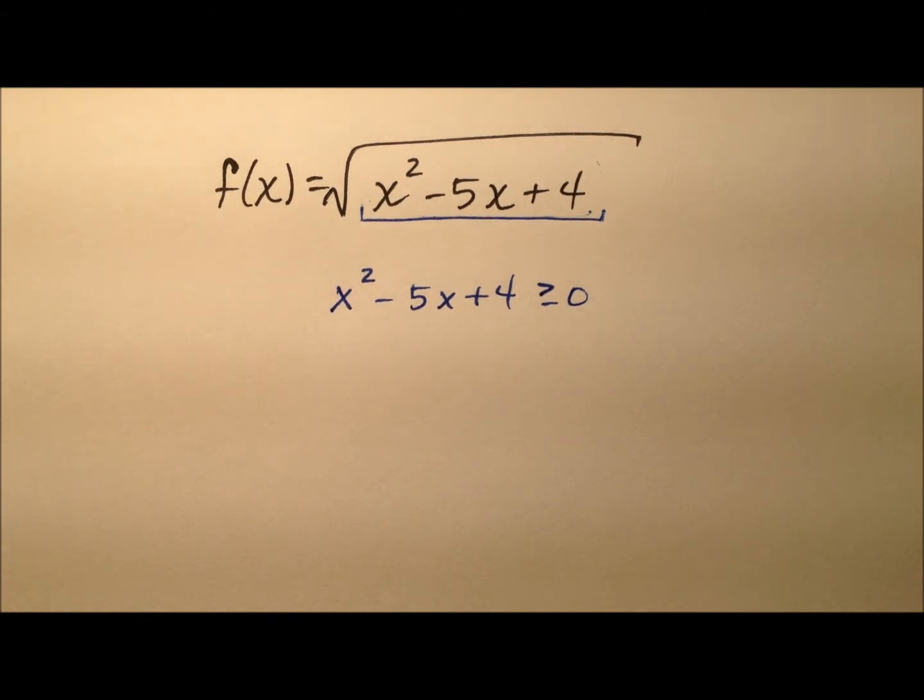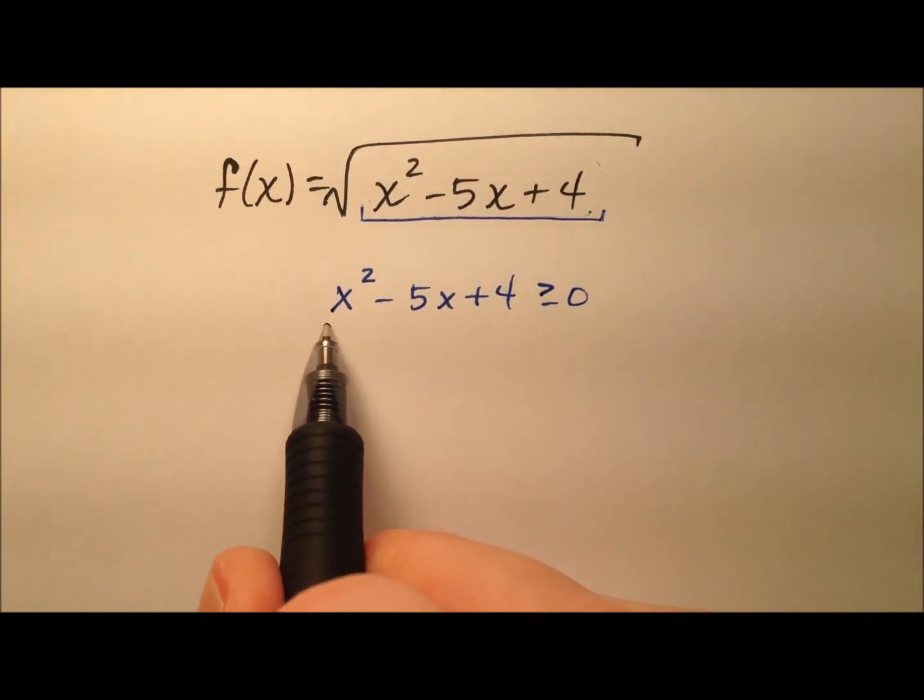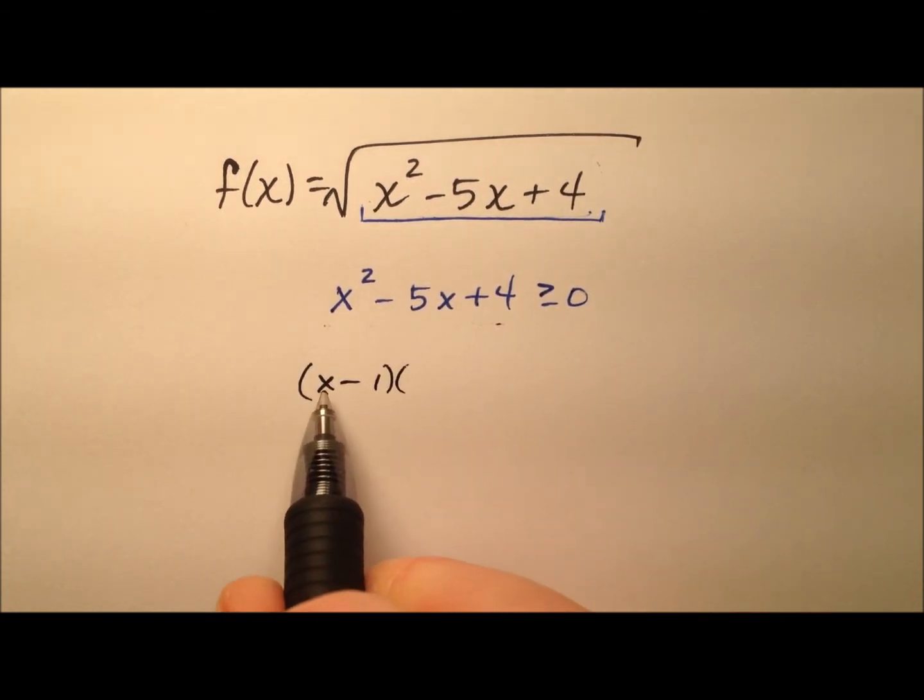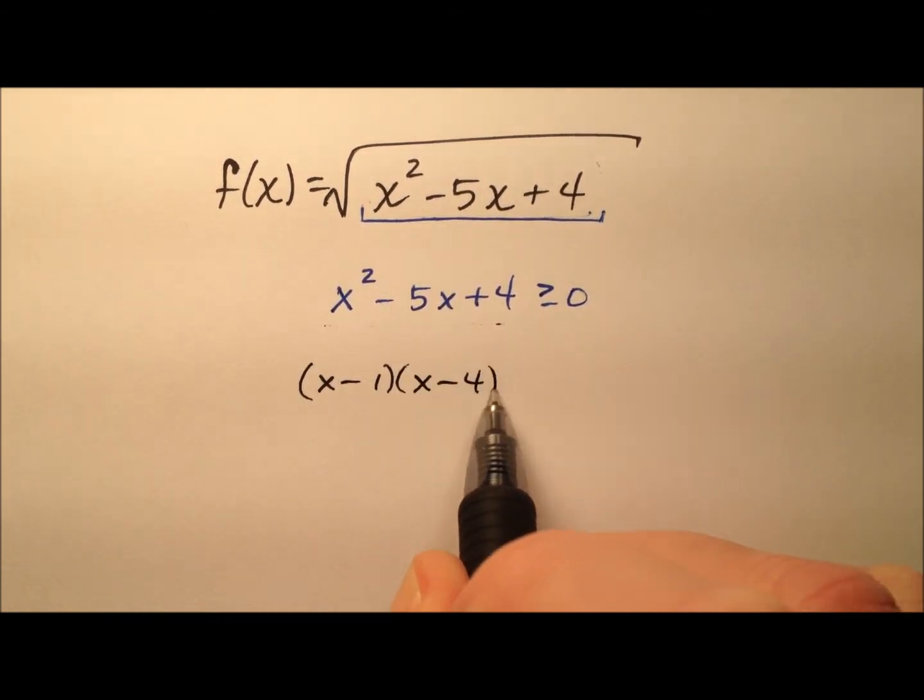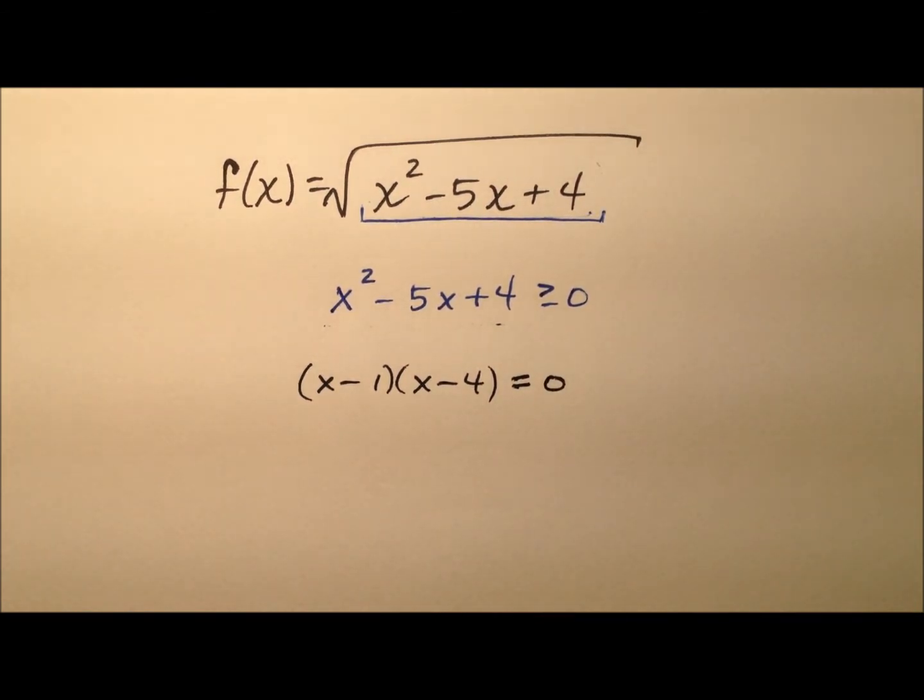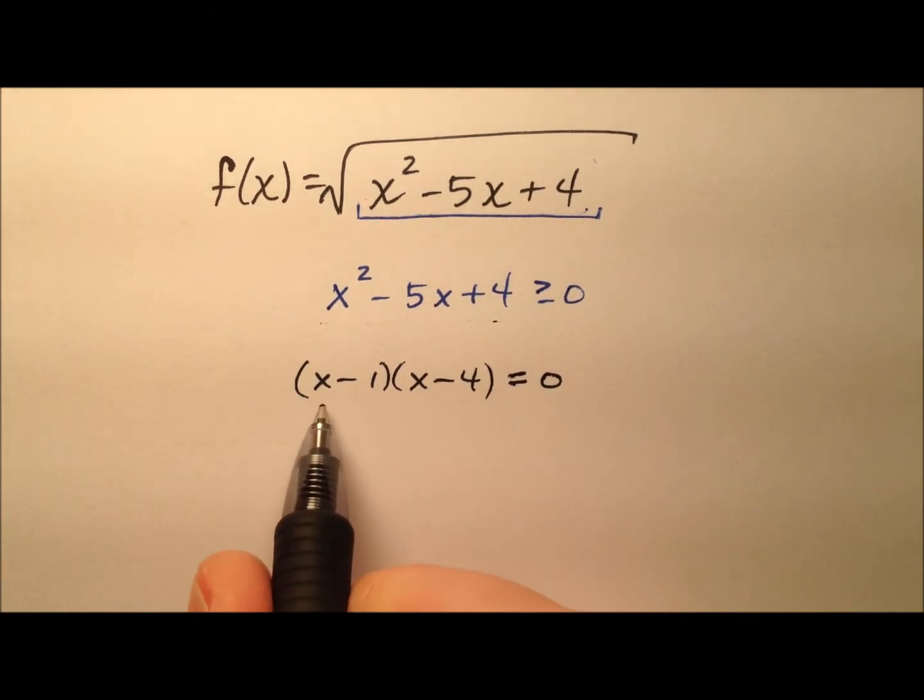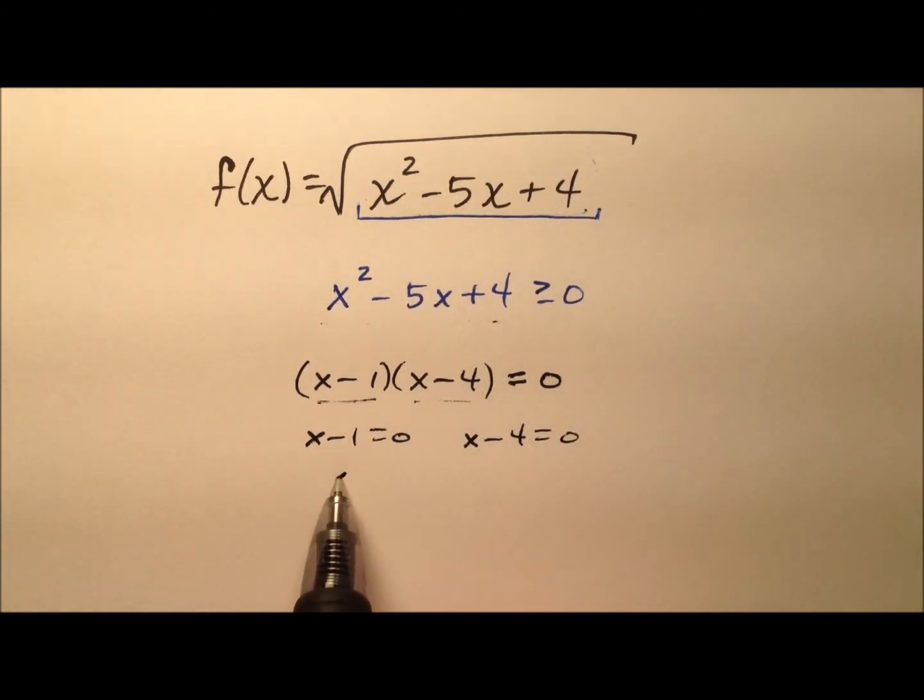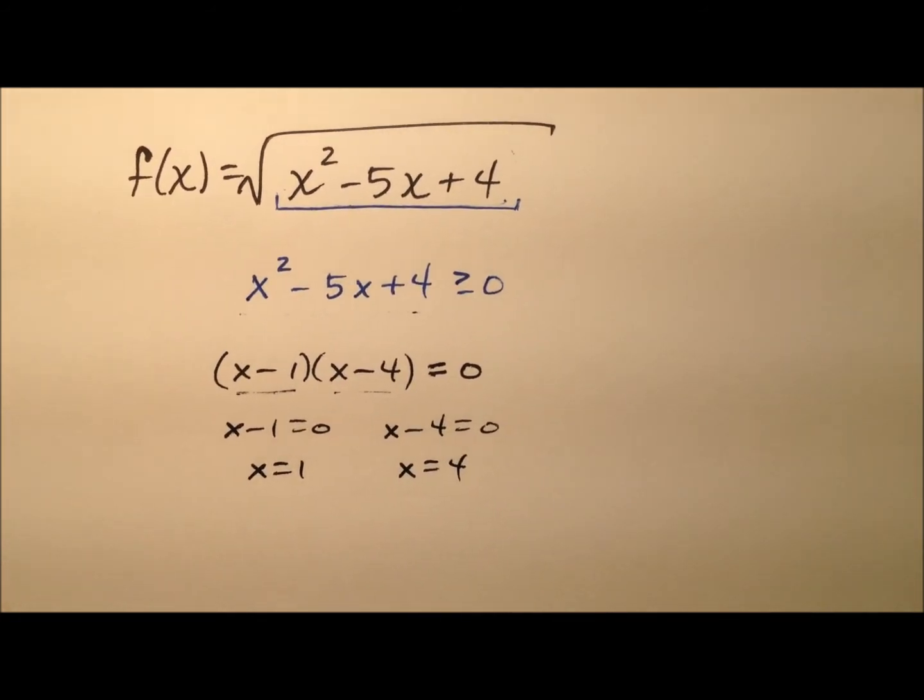How can we solve this inequality? I'm going to factor that left side, and it factors as (x - 1)(x - 4), and I'm going to set this equal to 0 to find these critical points. When I take each one of these factors and set it equal to 0 all by itself, using the zero property of multiplication, I'll see that x = 1 and x = 4. So those are my critical points.